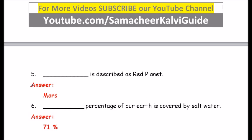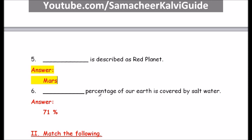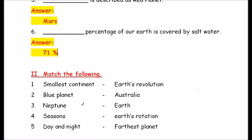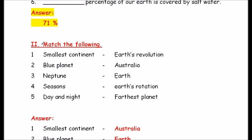Question number 5: Dash is described as the red planet. The answer is Mars — M A R S. Mars is described as the red planet. Question number 6: Dash percentage of our Earth is covered by salt water. The answer is 71%. 71% of our Earth is covered by salt water.